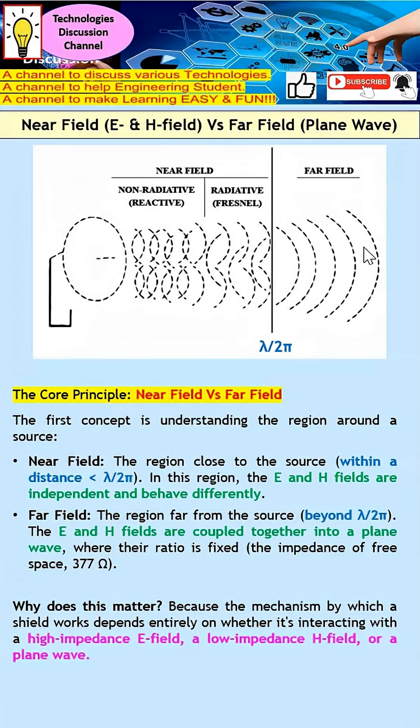Why is this important? Because when we build a shield, we need to know the source - whether it is a high impedance E field, a low impedance H field in the near field, or a plane wave. How the shield behaves will depend on the source.